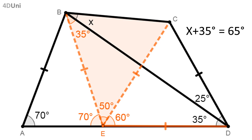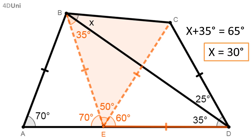Then we can say that x plus 35 degrees equals 65 degrees. Solving that simple equation, we get the value of x: it is 30 degrees. We have completed the solution to our problem. For solutions of other problems in geometry or other pre-university or university topics, visit 4dunit.com. Thank you for watching this video.